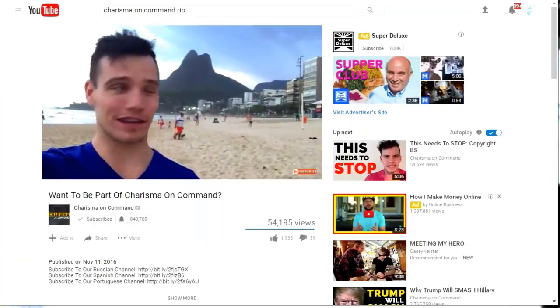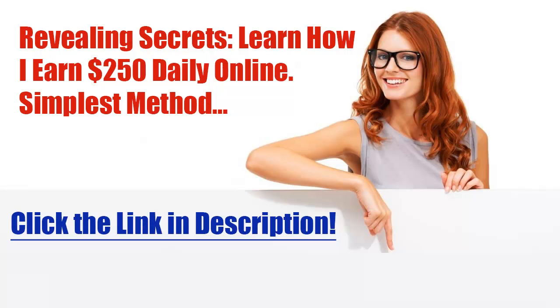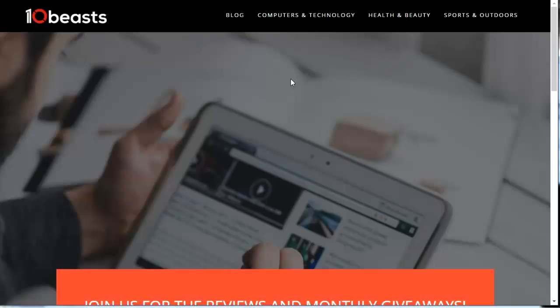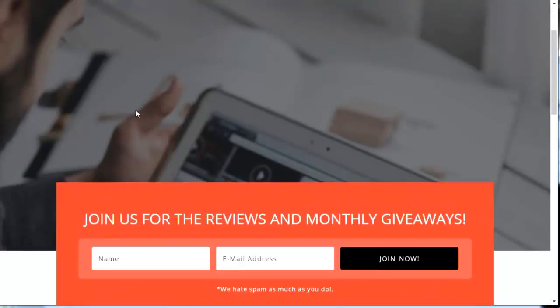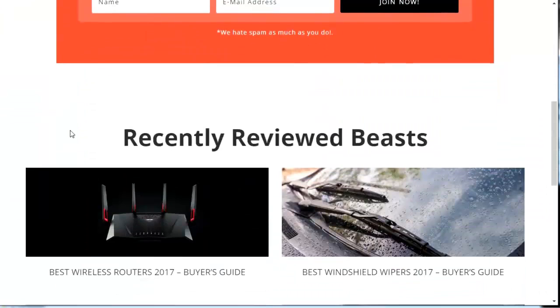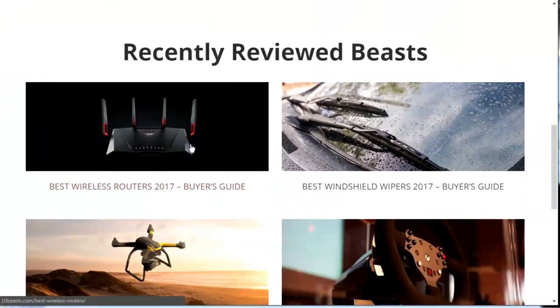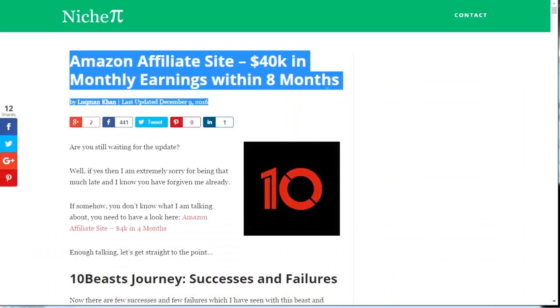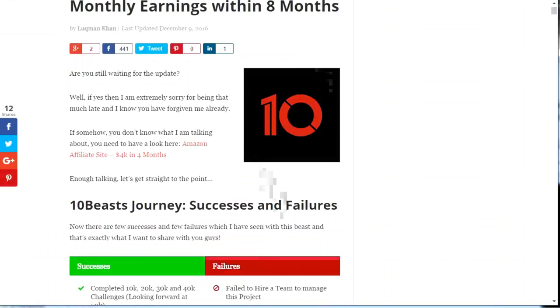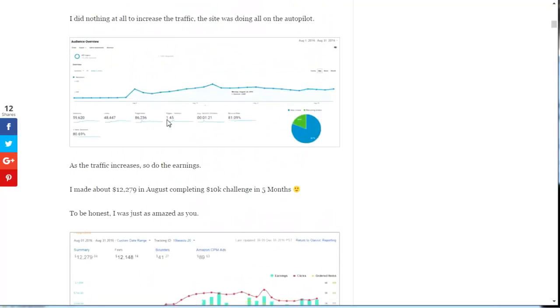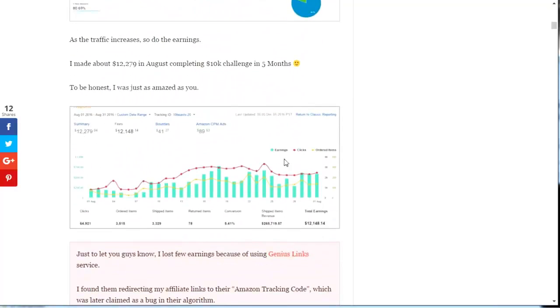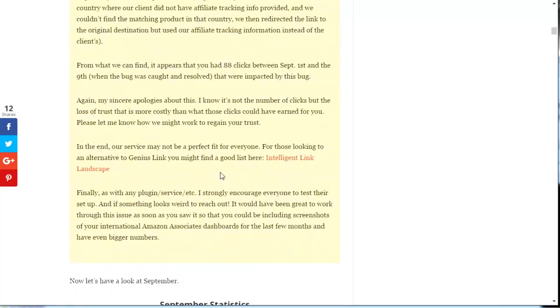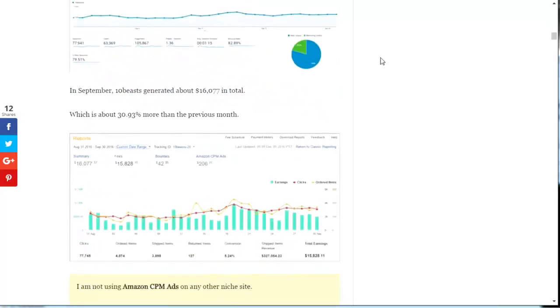So another thing I want to talk about is 10beasts.com. Now this is a website where the creator, his name is Lukman Khan, created an Amazon affiliate site, and has earned over $5,000 in the first 4 months, and over $40,000 in 8 months. So I figured I'd share his story here with you guys, and show what's actually possible. Now, the website is a list website, where people search for terms like, best wireless router, or best wireless router 2017, and click on his site.